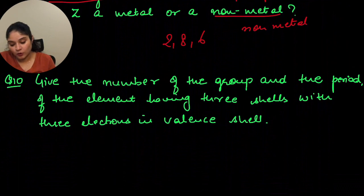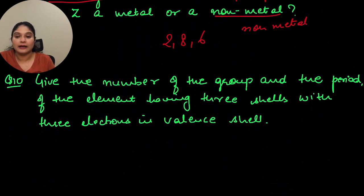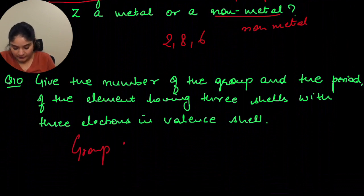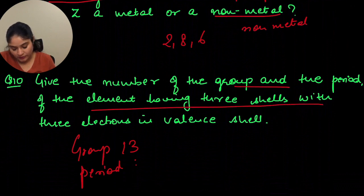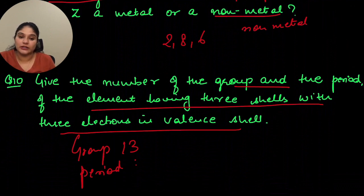Give the number of group and period of the element having 3 shells and 3 electrons in the valence shell. If there are 3 electrons in the valence shell, the group is 13. The period will be 3 because it has 3 shells. So: period 3, group 13.